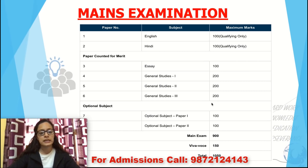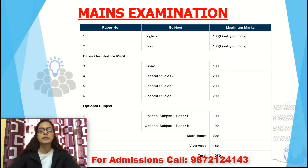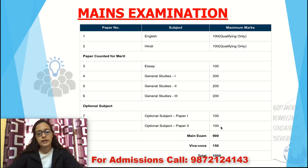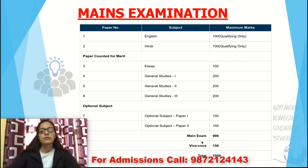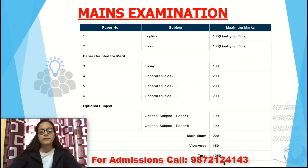After the language papers, there is Paper 3 which is an Essay for 100 marks. Then you have three General Studies papers of 200 marks each. There is also one Optional Subject with two papers. The total marks for the Mains examination come to 900. English and Hindi qualifying marks are not counted. To proceed to the Interview, you must clear the Mains, and the Interview carries 150 marks, making the total marks 1050.